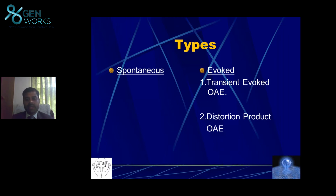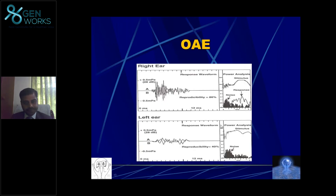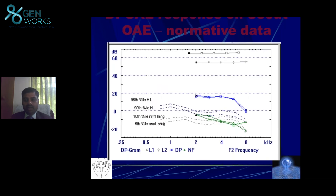There are two types of OAE: spontaneous OAE and evoked OAE. Spontaneous OAE are emissions that automatically occur. Evoked OAE are emissions where you give a stimulus and the outer hair cell responds to that particular sound, which you can measure using a probe in the external ear. Newborn hearing screening is usually done using evoked OAE.